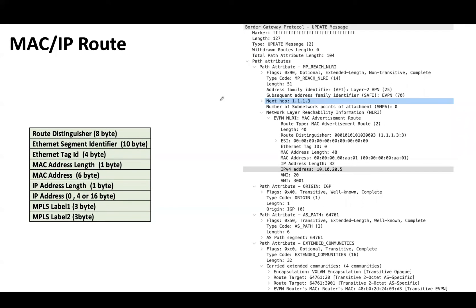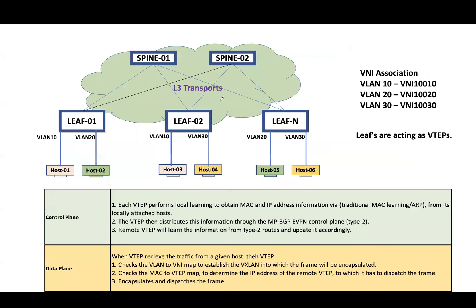Now let's start with route type 3. Before that, let's look at traffic forwarding. In the topology we have two hosts in each VLAN and we want communication between host 1 and host 3. Host 1 and host 3 are in the same VLAN 10, which is associated with VNI 110. I am assuming control plane learning is already completed — leaf 1 knows about host 3 and leaf 2 knows about host 1.